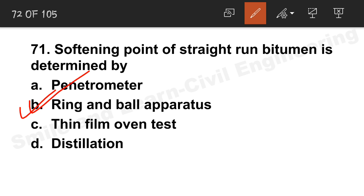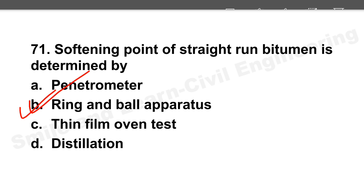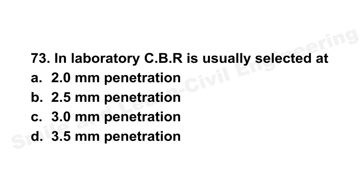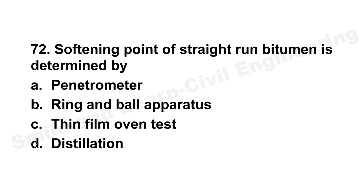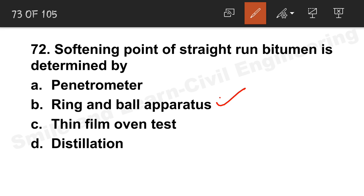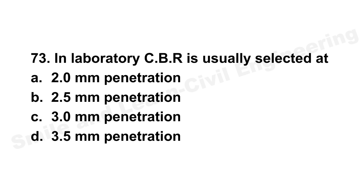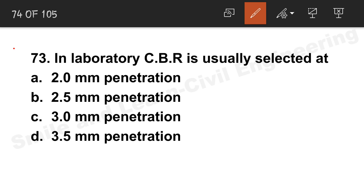Question 71: The softening point of straight run bitumen is determined by the ring and ball apparatus. Option B is the correct answer. Question 72 repeats the same question — option B again.